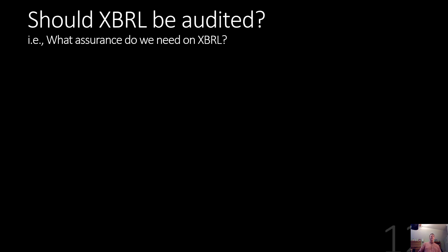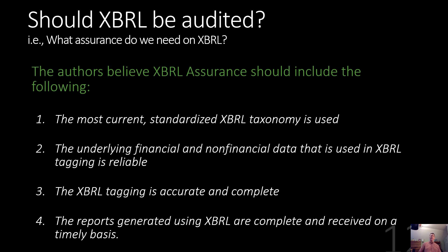Should XBRL be audited? Do we need assurance on it? We already mentioned that about 50% of companies do, but it is optional. The authors believe that assurance will come and become part of the overall financial statement audit. If and when that happens, or for an optional audit, you should check at least the following things: Are you using the most current, correct taxonomy for the filing? You don't want to file for 2020 using the 2019 taxonomy. Make sure underlying information is reliable — the actual financial statement audit can be a good starting point, ensuring the XBRL process begins with the content generated for that external audit.